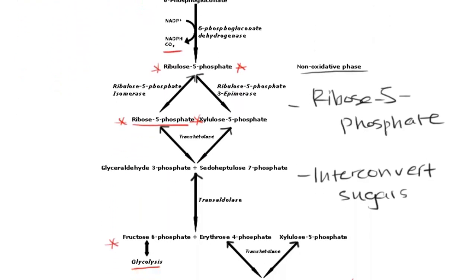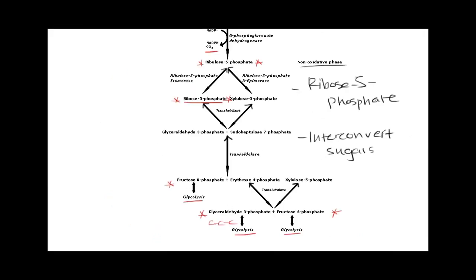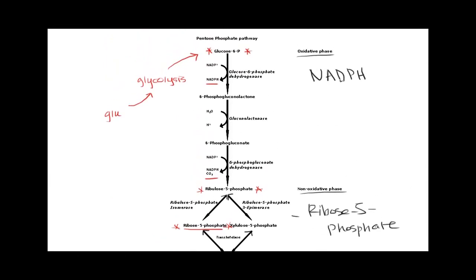But the non-oxidative phase allows interconversion and hence is thought of as more of a reversible pathway. So that, in a nutshell, is the pentose phosphate pathway.